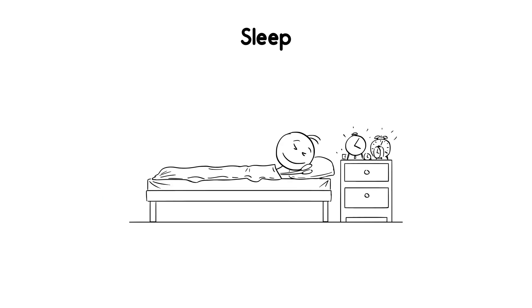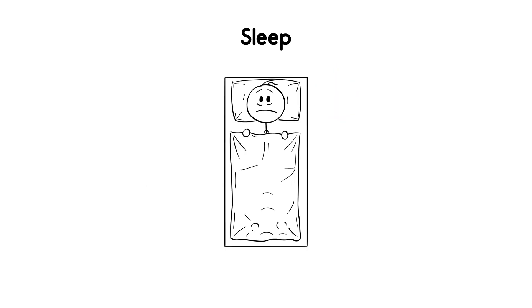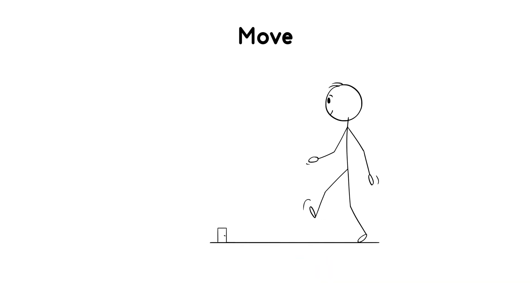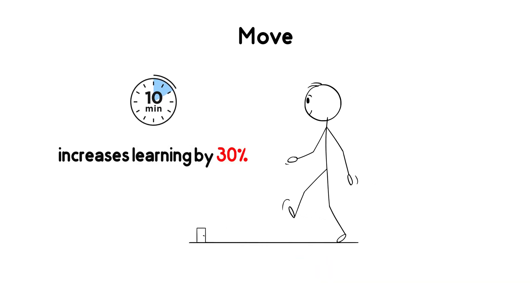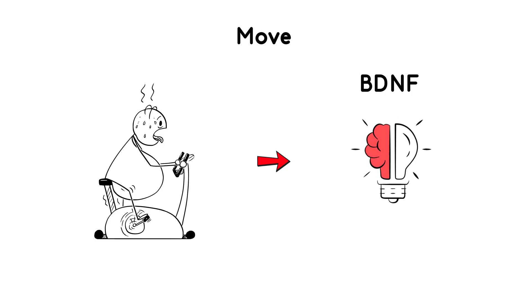Sleep. During deep sleep, your brain replays learning patterns. Lack of sleep equals losing all your effort. Move. Just 10 minutes of walking increases learning by 30%. Exercise releases BDNF, brain-derived neurotrophic factor, which acts like fertilizer for memory.